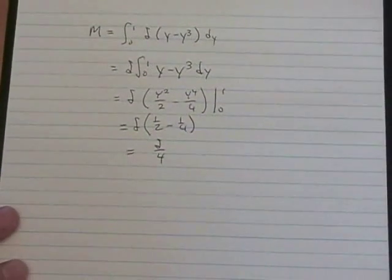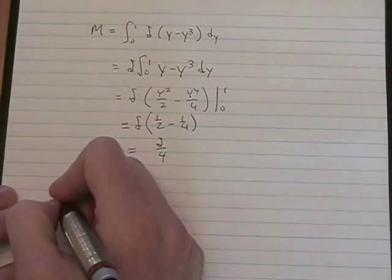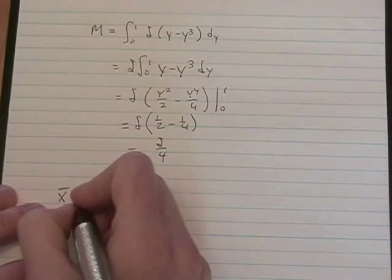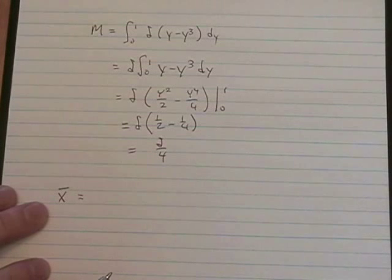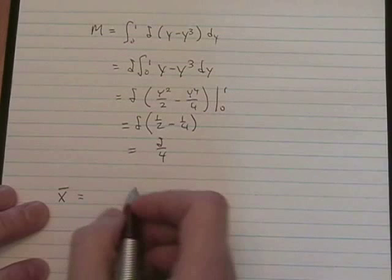Now here's the punchline. X bar, the x coordinate of the center of mass, is m sub y, or the moment about the y axis, divided by the mass.